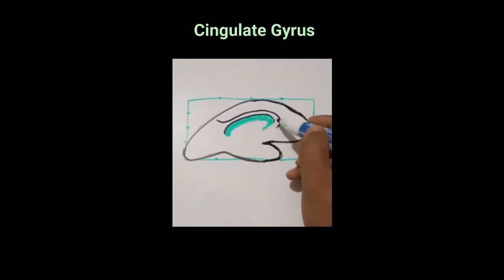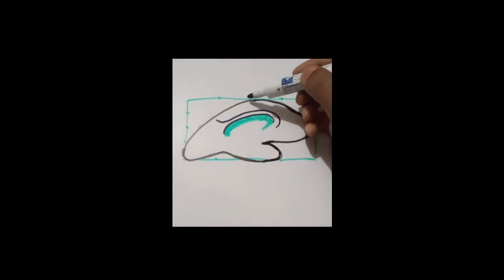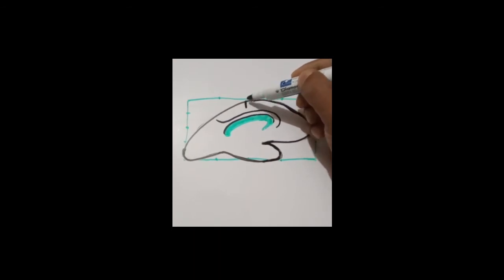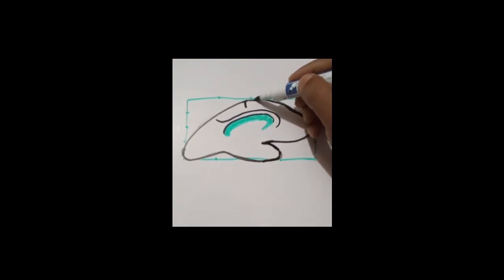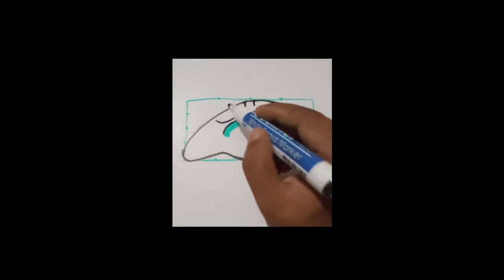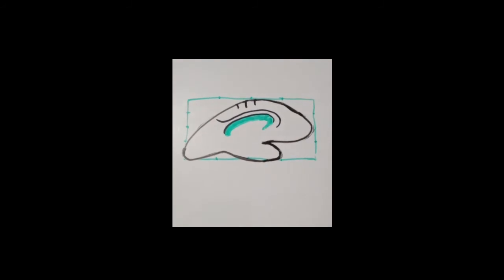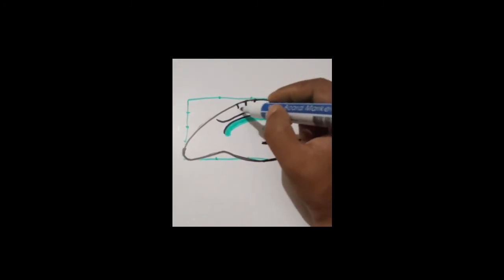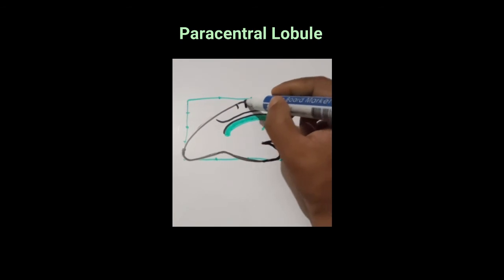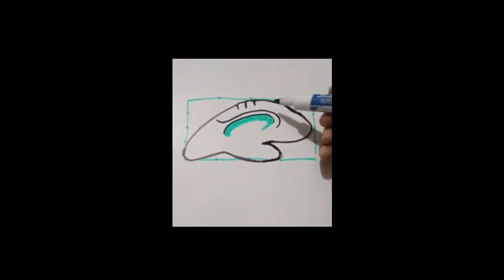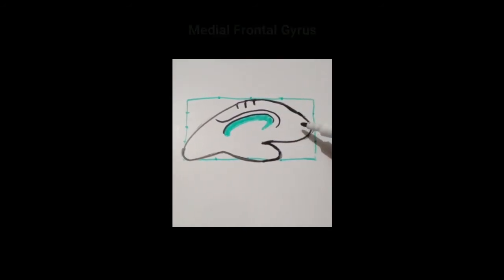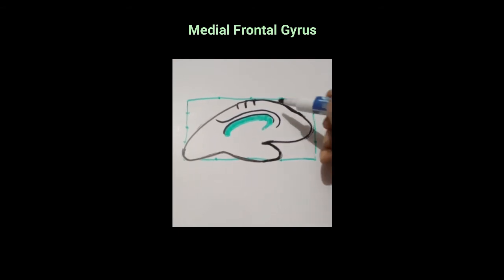This area is termed as the cingulate gyrus. Here the central sulcus cuts the superomedial border and comes to the medial surface, and in front of it the pre-central sulcus also comes here, and behind, the post-central sulcus also comes here. So this area will be termed as the paracentral lobe, and the area in front of these sulci is the medial frontal gyrus — actually it is the medial surface of the frontal lobe.